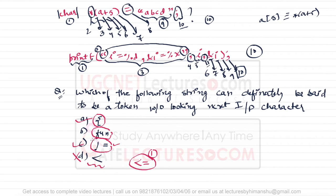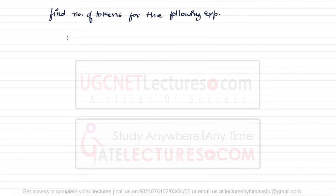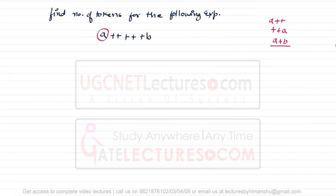So options (a) and (c) — the opening bracket and the not-equal-to sign — can be identified as tokens without looking at the next symbol. Now consider the next problem: find the number of tokens for the following expression: a++++++b.